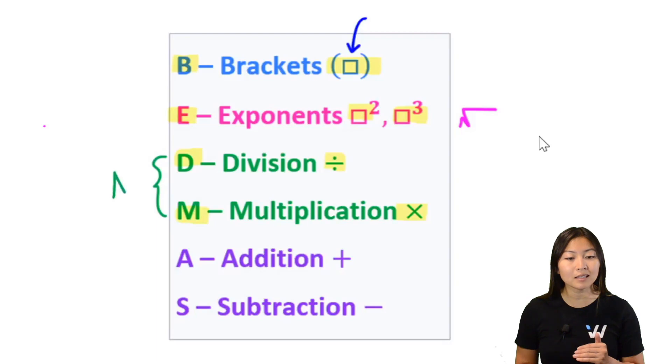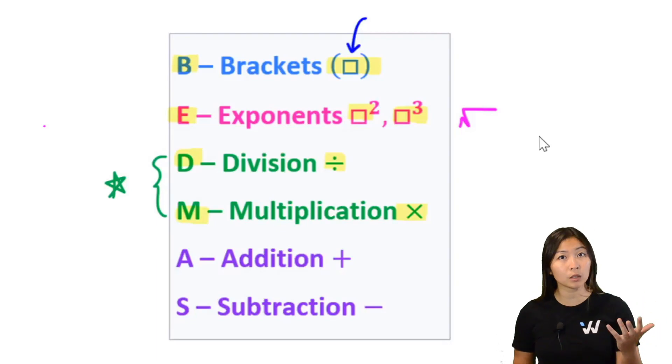These two are on the same level, meaning that once you're done dealing with brackets, once you're done dealing with exponents, you are going to go from left to right in your string of numbers, and whichever one you see first, whether it's division or multiplication, you're going to simplify that first.